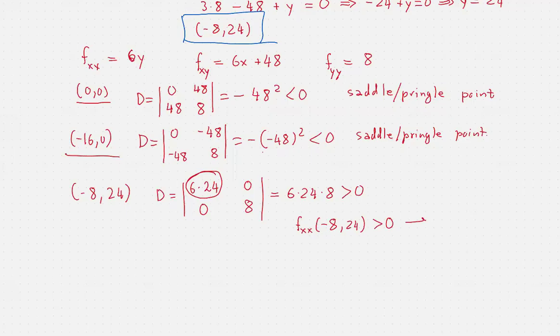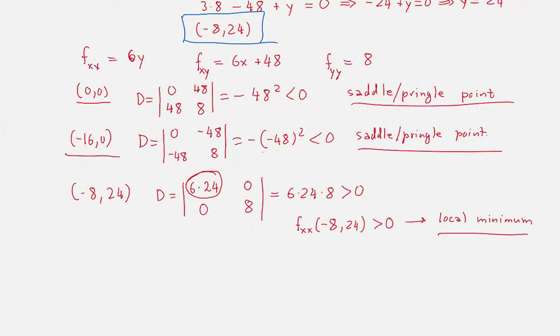Please notice that we could equally look at f_yy at the same point, which would have drawn the same conclusion. So the three critical points that we found correspond to two saddle points and one local minimum. And that's all. Thanks for watching.